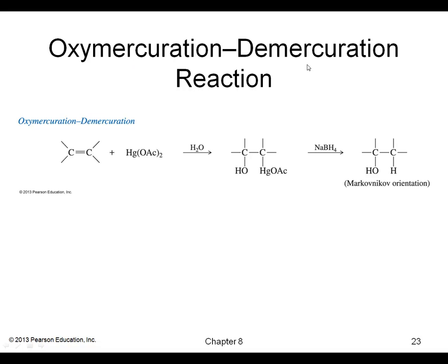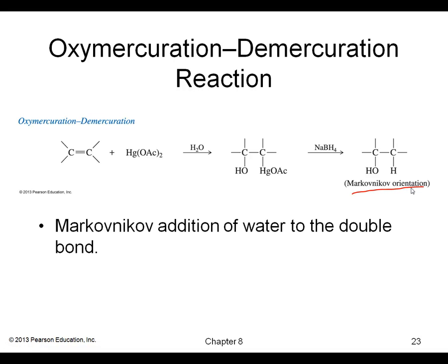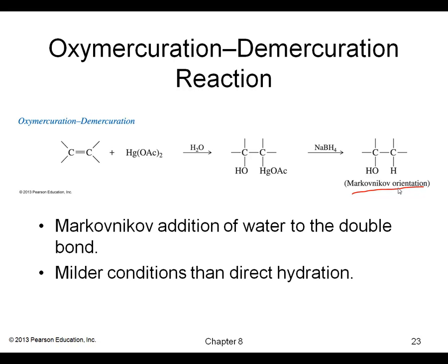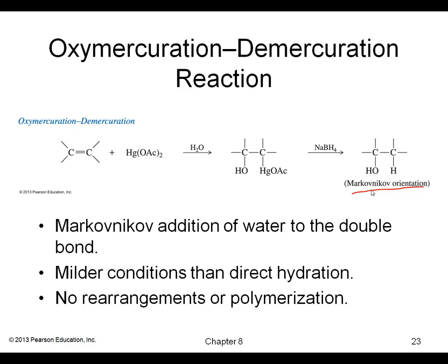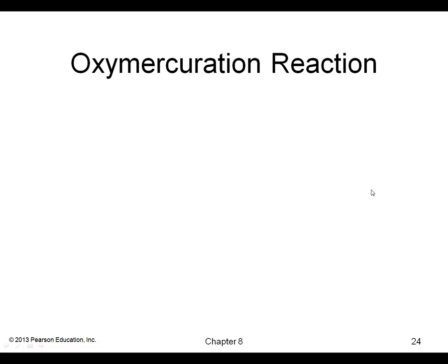Our next reaction is the oxymercuration-demercuration reaction, a two-step reaction to form an alcohol. We first react the double bond with mercuric acetate and water, then react with sodium borohydride to give us the Markovnikov alcohol. So we now have two ways to form a Markovnikov alcohol, and in the oxymercuration-demercuration reaction there is no possibility of rearrangements.